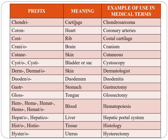Chondro indicates cartilage, for example chondrosarcoma. Corono indicates heart, as in coronary arteries. Costo indicates ribs, as in costal cartilage. Cranio indicates brain, as in cranium. Cutane or cutaneous indicates skin.